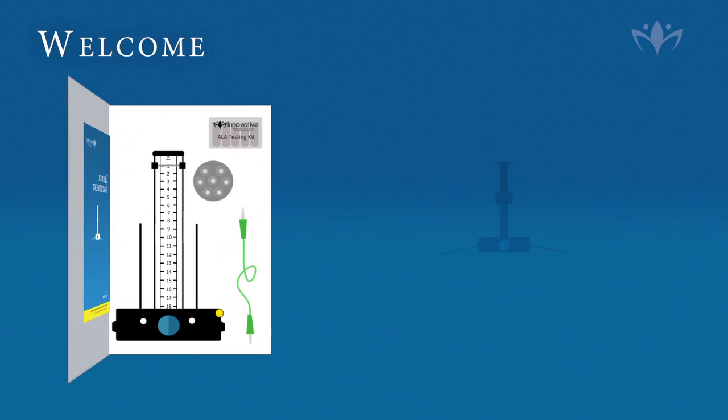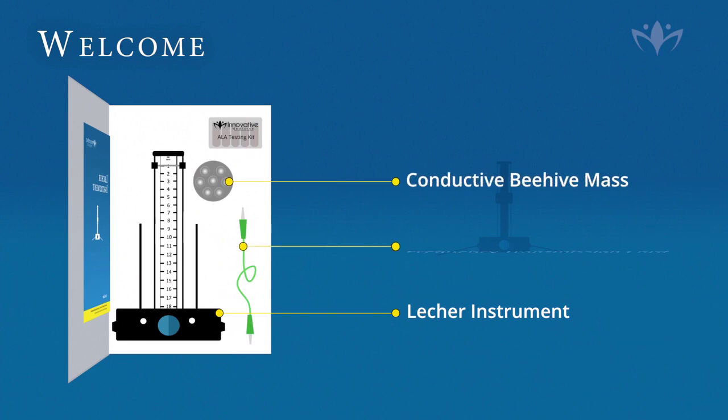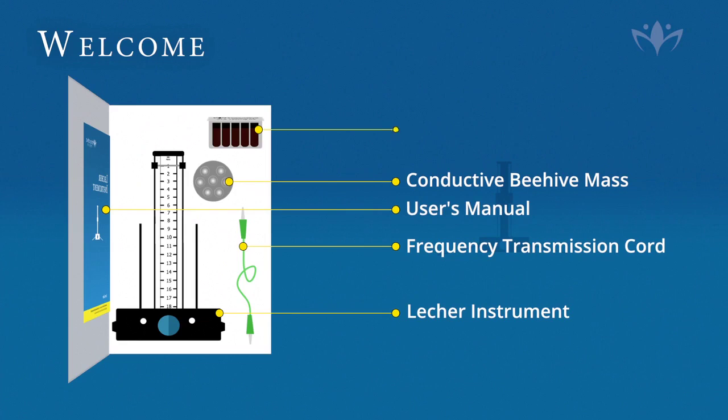In addition to the Lecher instrument found in your protective case, you will also find a conductive beehive mask and frequency transmission cord, a user's manual, and a test kit with five substances. For further information on these items, please refer to your user's manual.